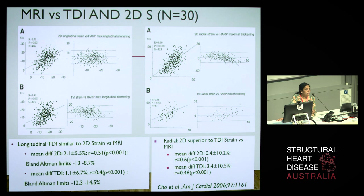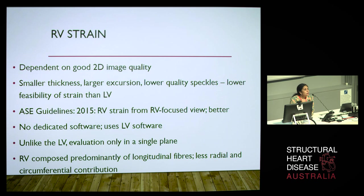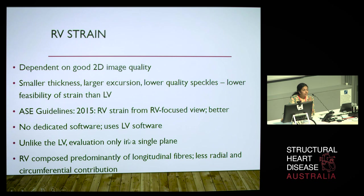What about the right ventricle? All 2D strain is only as good as the 2D image quality. The RV has smaller thickness, larger excursion, and lower quality of speckles, so feasibility is a bit less than tracking the left ventricle. The ASC guidelines from 2015 recommend we use our RV focus view. We don't have dedicated software for the right ventricle and currently use left ventricular software, evaluating it in a single plane, bearing in mind that RV function is predominantly comprised of longitudinal contraction.